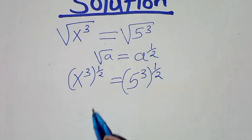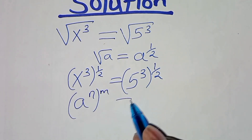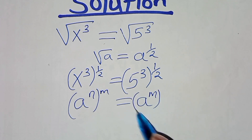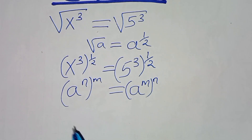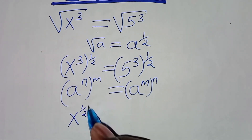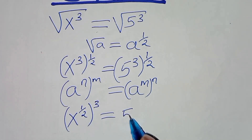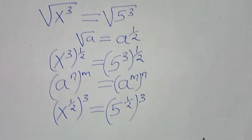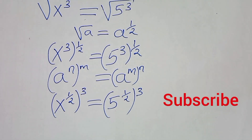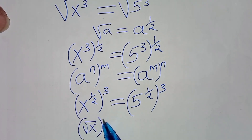Now applying the exponent power rule property — that is, a to power n, raised to power m, can be expressed as a to power m, raised to power n — we get x to power one-half, raised to power 3, equal to 5 to power one-half, raised to power 3. We can then express x to power one-half to power 3 as the square root of x raised to power 3.